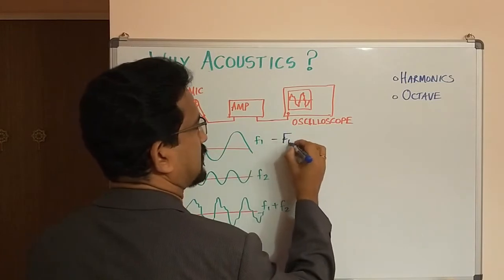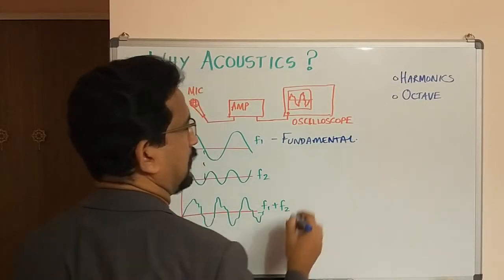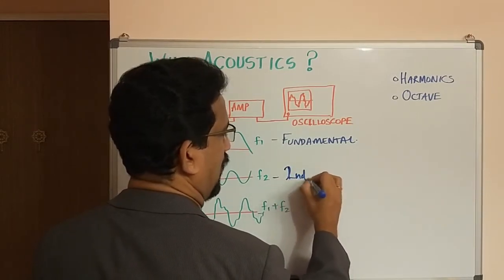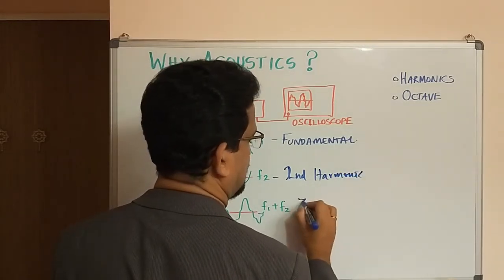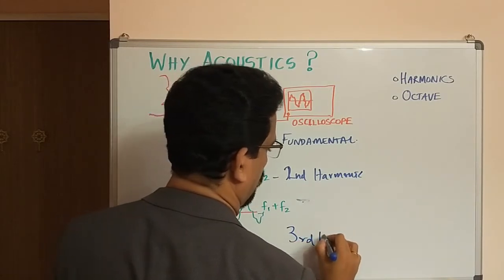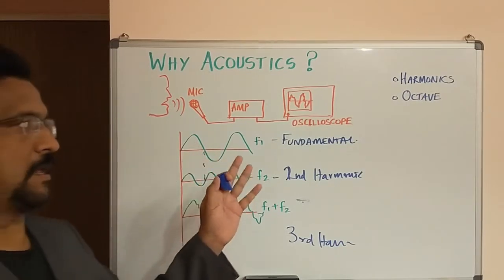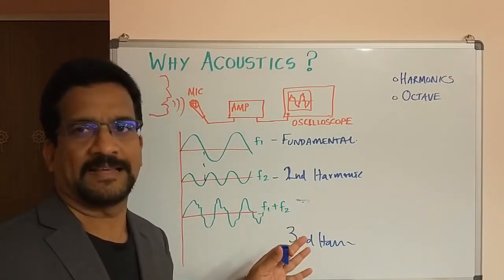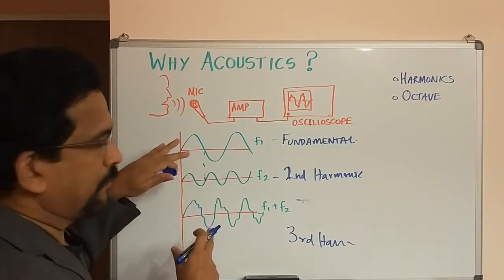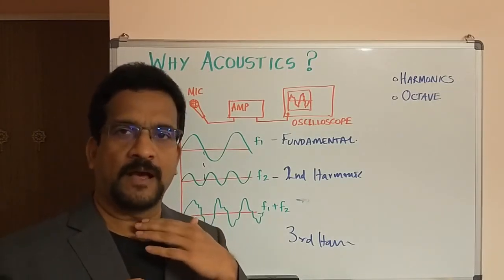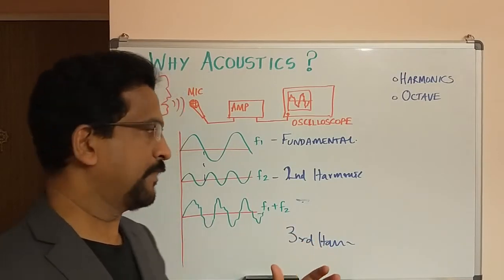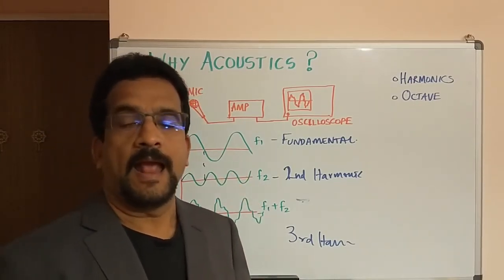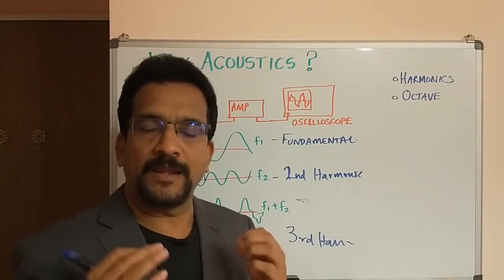The first waveform we call the fundamental frequency, and the second one we call the second harmonic. In the same way we will have a third harmonic, fourth harmonic, and so on. A particular sound will produce a fundamental frequency and also a second harmonic, third harmonic, fourth, fifth, and so on. For simplicity we have shown just two waveforms — f1 and f2 — but in reality, analyzing a voice would reveal a fundamental frequency plus second, third, fourth, fifth, sixth harmonics, making it very complex.